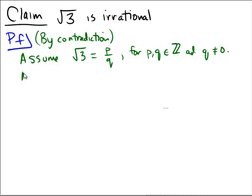If this were true, notice, now, if we square both sides, we would get that 3 equals p squared over q squared.